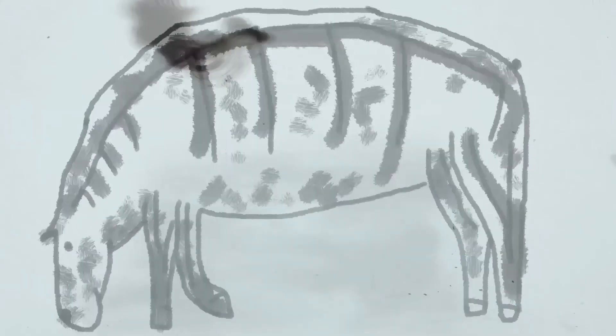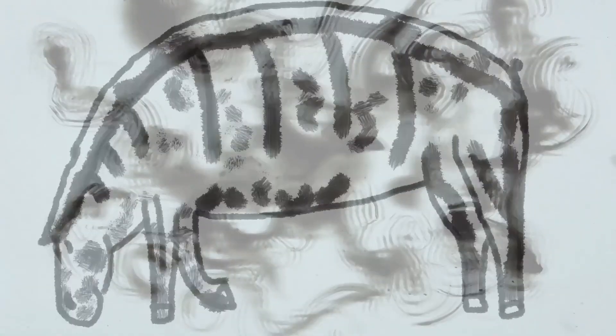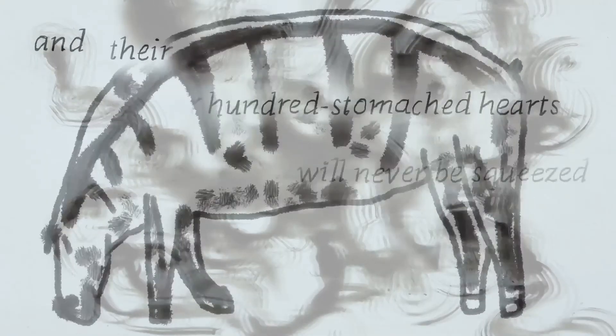Afterward, bridges guiltily arch their spines like horses that promptly toss off a stranger rider. They dip their muzzle so they can't get their fill of water, and their hundred-stomached hearts will never be squeezed.